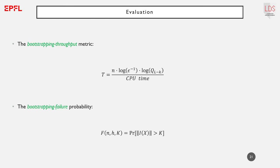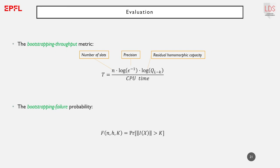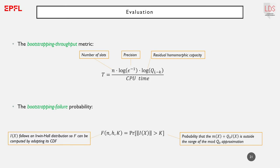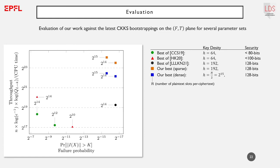We consider two metrics to evaluate bootstrapping procedures. The first is the bootstrapping throughput metric, which measures the number of effective homomorphic plaintext bits bootstrapped per second — computed as the number of plaintext slots times the precision (the inverse of the average error) times the size of the ciphertext modulus after bootstrapping, divided by the CPU time. The second metric is the bootstrapping failure probability, equal to the probability that the message before the homomorphic modular reduction falls outside the range of the mod q_0 approximation. Since i follows an Irwin-Hall distribution, the failure probability is computed by adapting its cumulative distribution function.